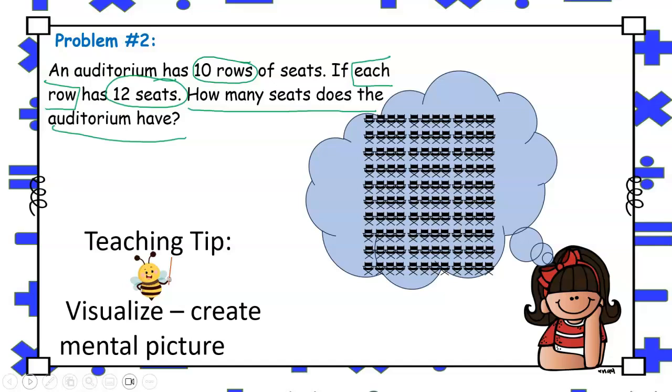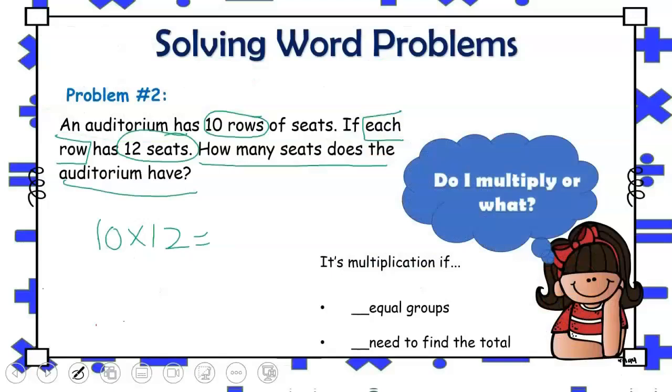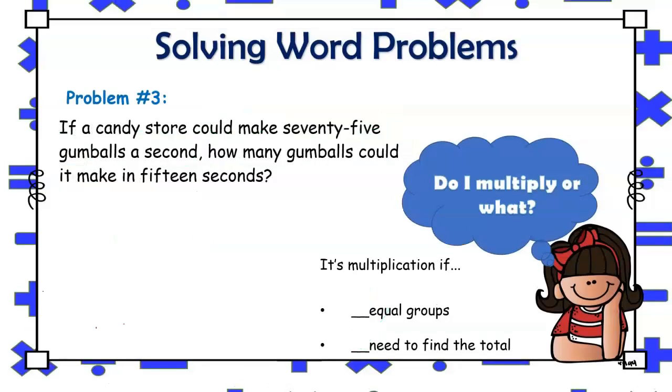Thinking back to the question, how many seats does the auditorium have? That requires us to find the total. Again, students may recognize that addition and multiplication can help you find the total. However, because this problem involves equal groups and you have to find the total, multiplication would be the most efficient strategy to use. Here's another example.